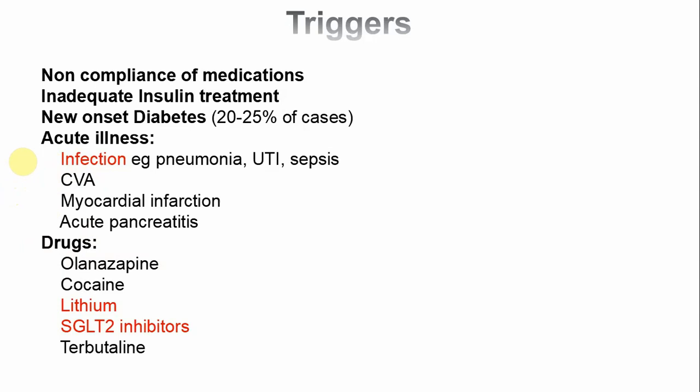Some drugs can trigger DKA — specifically lithium, which our patient was taking. A novel diabetic treatment, the sodium-glucose co-transporter 2 (SGLT2) inhibitor, can give rise to euglycemic DKA, where blood sugar is normal but ketoacidosis is still present.